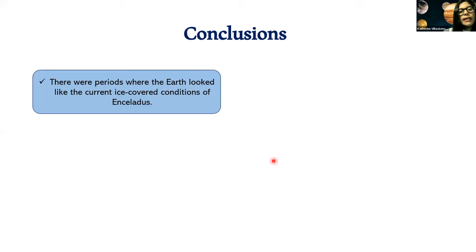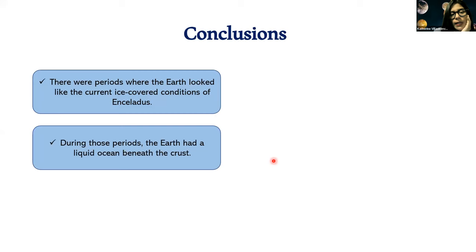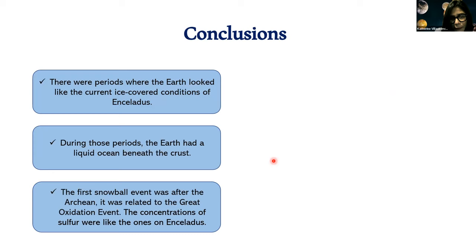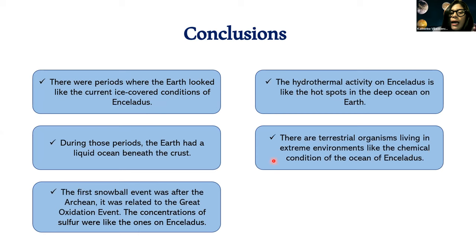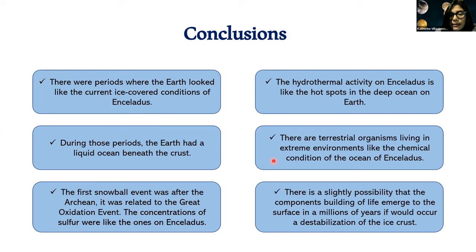In conclusion: there were periods where the Earth looked like the current icy-covered condition of Enceladus. During this period, Earth had a liquid ocean beneath the crust as is present on Enceladus. The first Snowball event was after the Archean and was related to the Great Oxidation Event. The concentration of sulfur was like what is present on Enceladus. The hydrothermal activity on Enceladus is like the hot spots in the deep ocean of Earth. There are terrestrial organisms living in environments similar to the chemical conditions of the ocean of Enceladus. There is a slight possibility that the building blocks of life could emerge to the surface in a million years if destabilization of the ice occurs and gases can interact with the atmosphere. Thank you.